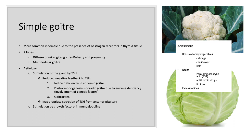Simple goiter occurs mainly due to two stimuli: TSH and growth factors. TSH stimulation can be due to reduced or absent negative feedback, or inappropriately increased secretion of TSH from the anterior pituitary. Reduced negative feedback to TSH occurs in iodine deficiency, dyshormonogenesis, and goitrogens. Goitrogens are foods or substances that increase the size of the thyroid gland — Brassica family vegetables such as cabbage, cauliflower, and kale are examples. Drugs such as para-aminosalicylic acid, antithyroid drugs, and lithium also increase thyroid size. Excess iodide consumption also increases thyroid swelling.